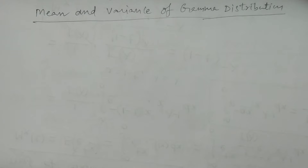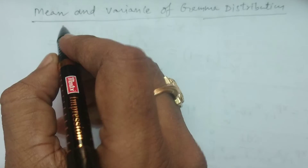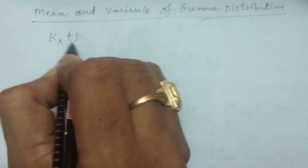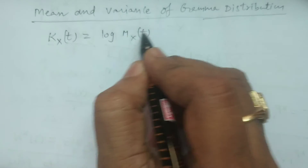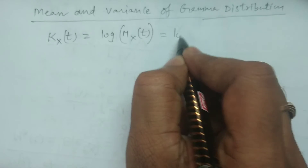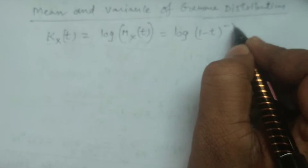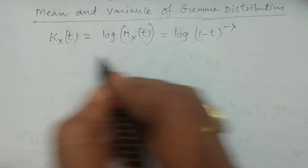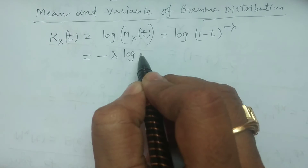How to calculate mean? For this, I first explain the cumulant generating function in two or three steps. The cumulant generating function of gamma distribution is calculated by k(x,t) = log m(x,t), where m(x,t) is the moment generating function of gamma distribution, which is (1 - t) raised to the power minus lambda. So this can be expressed as minus lambda times log(1 - t).